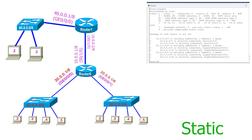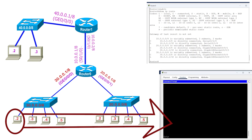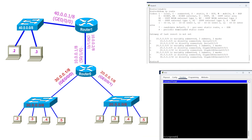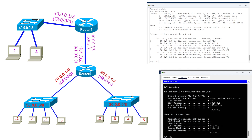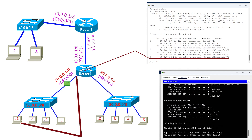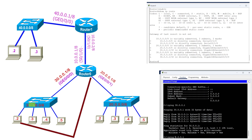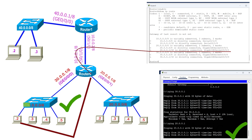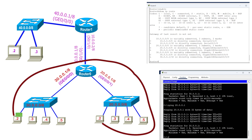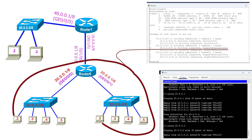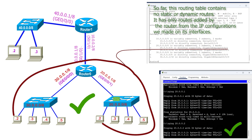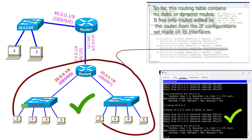Let us verify this. Open the command prompt of a PC in subnet 30 and check it has a valid IP configuration. Send a ping request to its default gateway — reply messages confirm connectivity. Now check connectivity with the default gateway of subnet 20; it has connectivity. Finally, send a ping to a PC in subnet 20 — a reply confirms subnets 30 and 20 can communicate. This also verifies that subnets connected through a single router do not need static or dynamic routes.